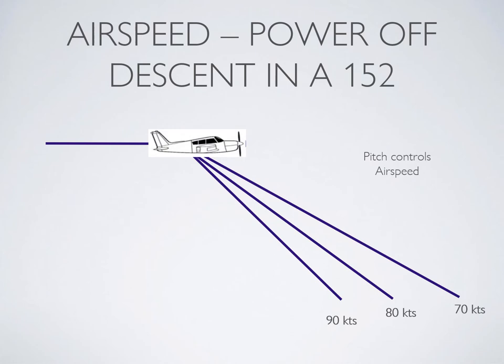Notice that in a gliding descent, it's your pitch that controls your airspeed. To go faster, pitch down; to go slower, pitch up. You'll still be descending, but you're changing your glide profile. As a safety note, don't go any slower than your best glide speed — we'll cover that more in Lesson 10.